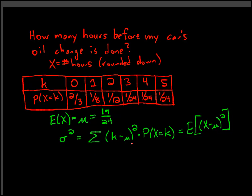Here it is in a nice concise formula, though I'll have to use the entire length of my screen to write it out. I forgot to put my summation limits here: I sum from k equals 0 to 5, over all the possible values of my random variable.